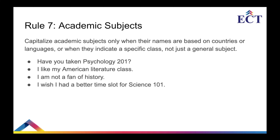Rule seven: academic subjects. Capitalize academic subjects only when their names are based on countries or languages, or when they indicate a specific class rather than a general subject. We do not capitalize general subjects like mathematics or history. But if you are talking about a specific class, you capitalize it. For example, 'Have you taken Psychology 201?' — 'P' is in capital. But 'Have you taken psychology?' — 'p' would be small.